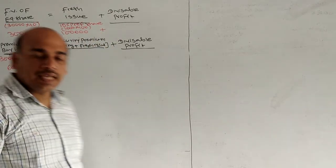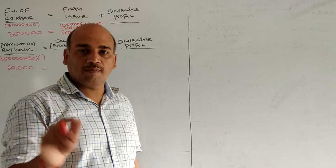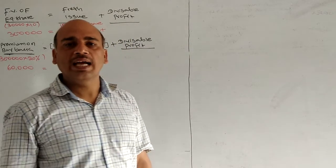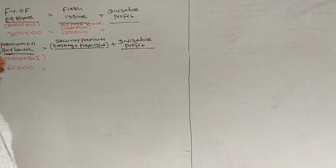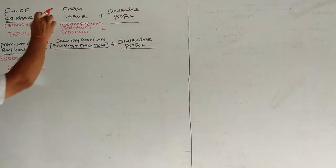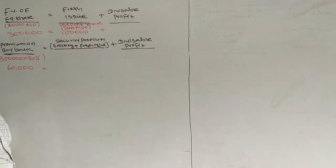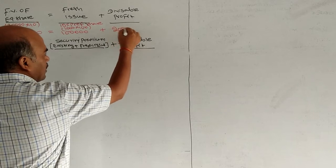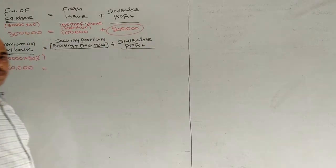What did they say? At par, meaning the fresh issue I'm doing has no premium. Now the meaning is that I have to buyback 3 lakhs rupees. Where will it come from? Fresh issue and free reserves. Fresh issue instruction given - I'll raise 1 lakh rupees from fresh issue, 2 lakhs rupees from free reserves.